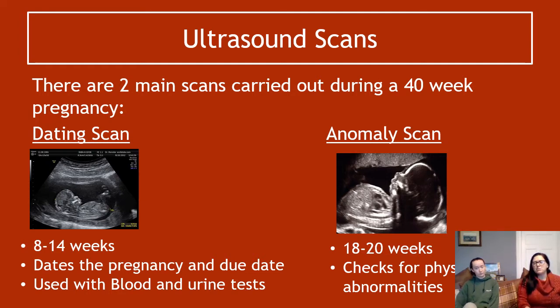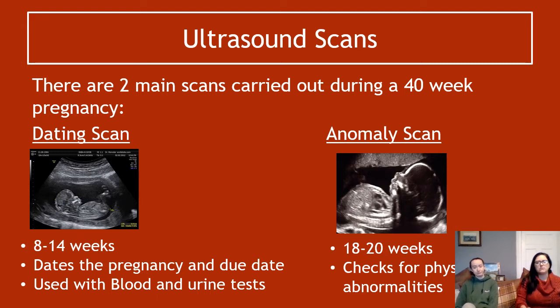The anomaly scan is at 18 to 20 weeks — later on in the pregnancy, after the fetus has developed things like arms and legs and normal bodily features — and it's checking for physical abnormalities.